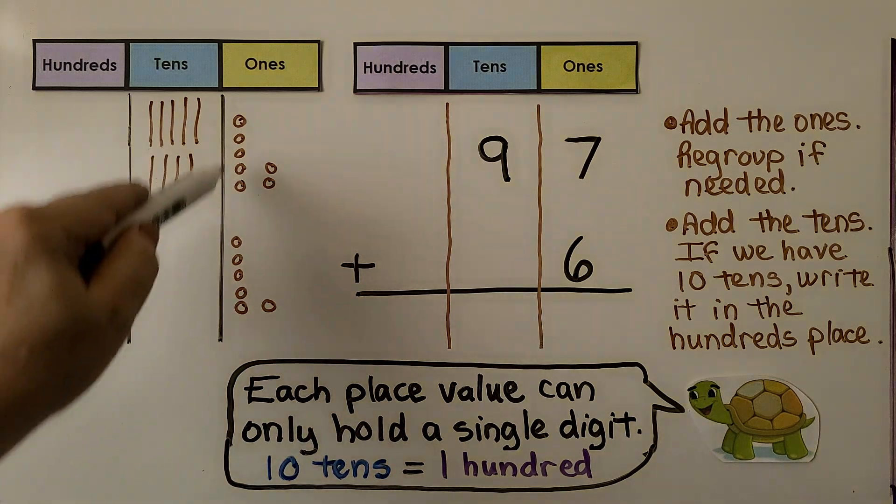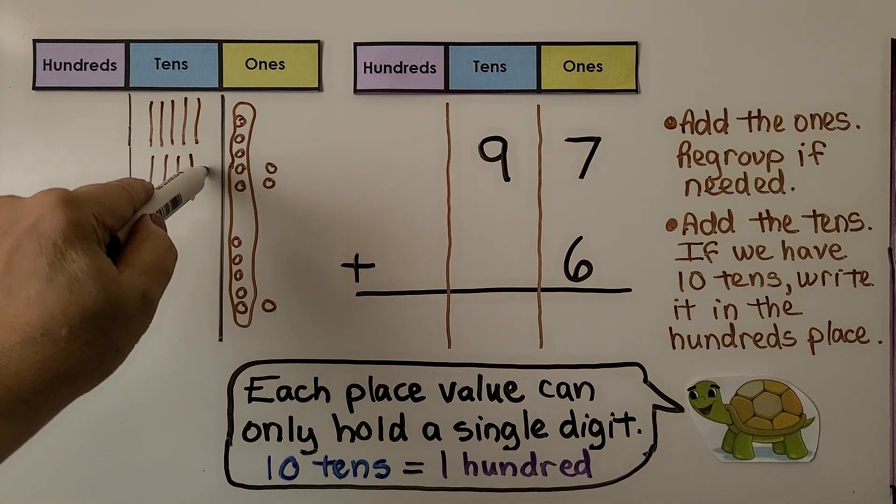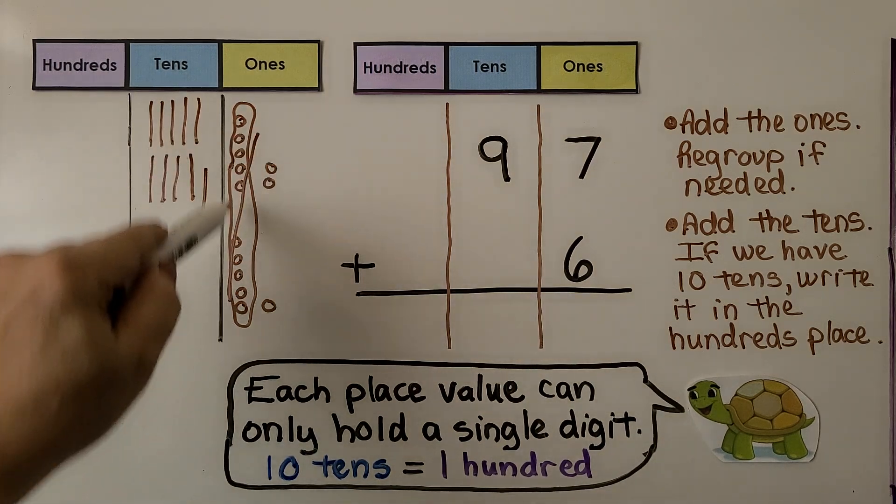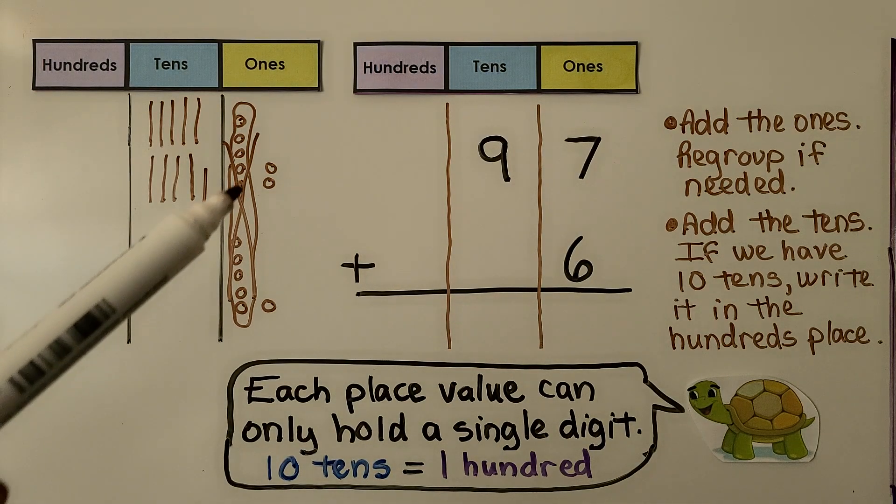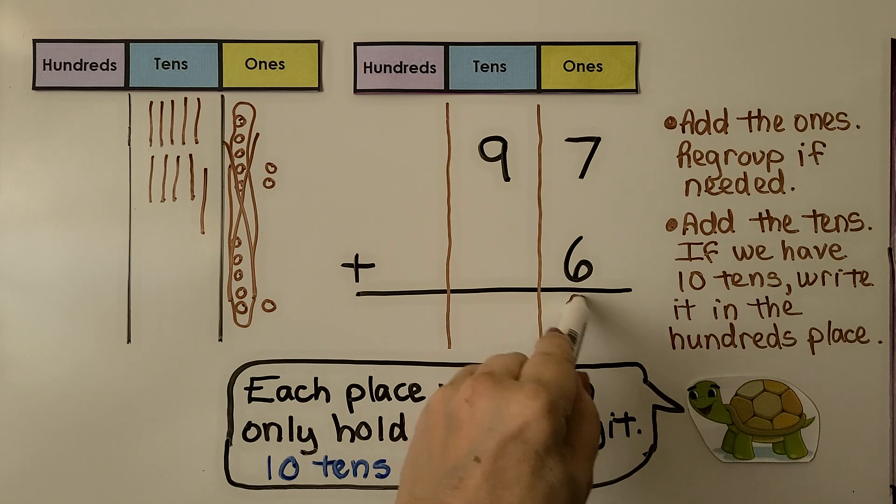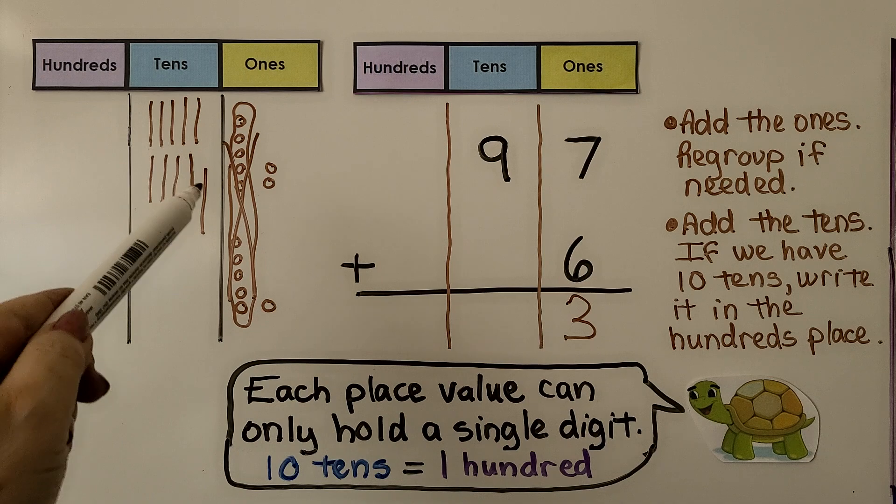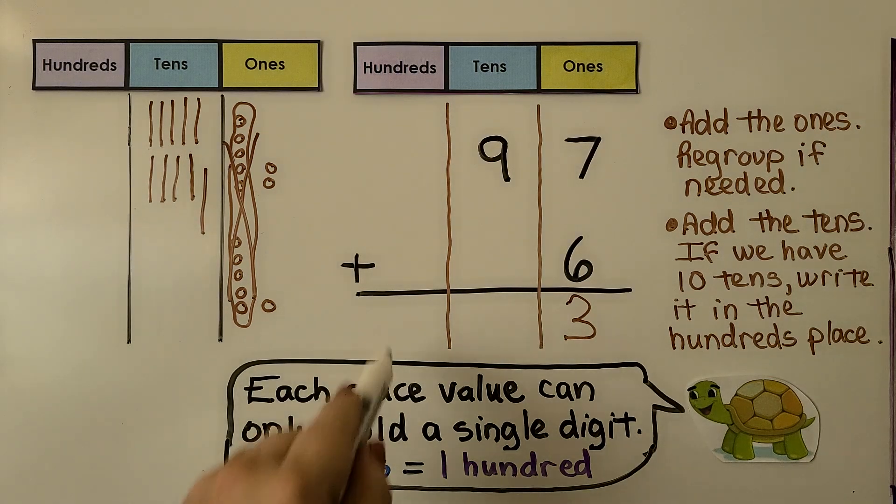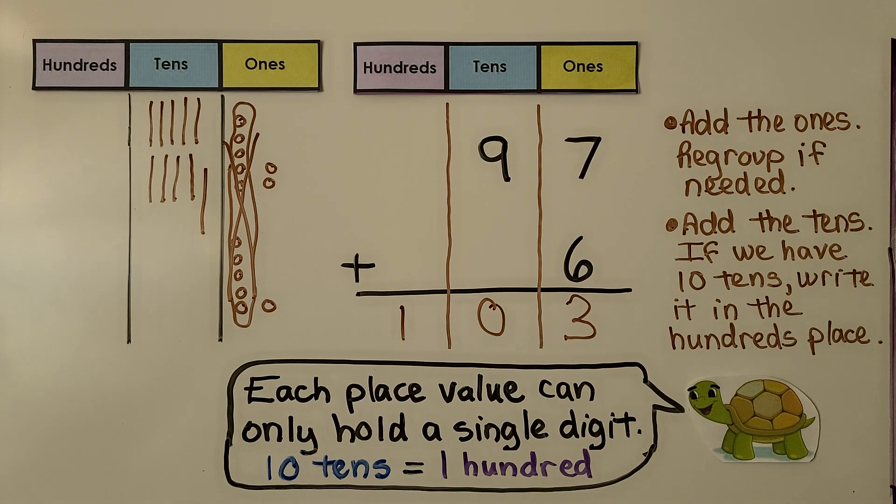We can see there's five here and five here. We can make a ten with these. We move it to the tens place and cross this one out. Now we have three ones and five, six, seven, eight, nine, ten tens. We write it as one hundred, zero tens, three ones. Each place value can only hold a single digit.